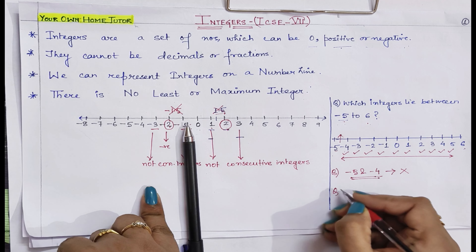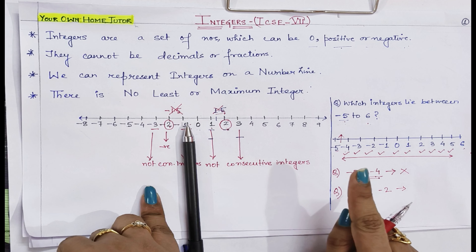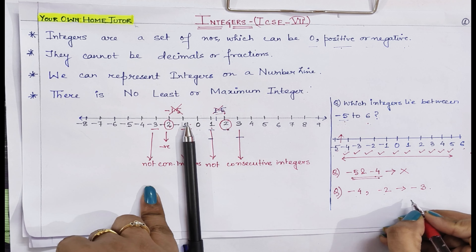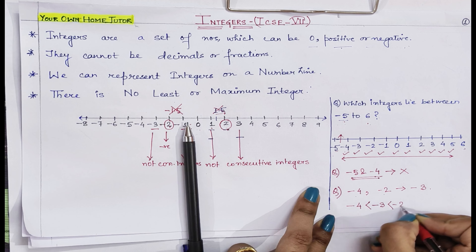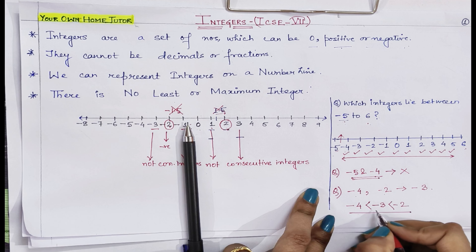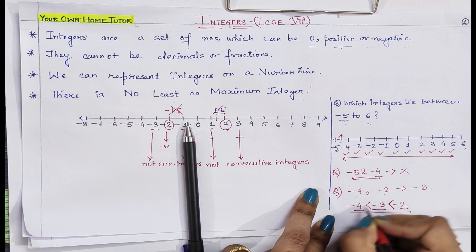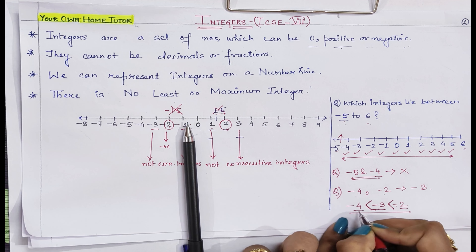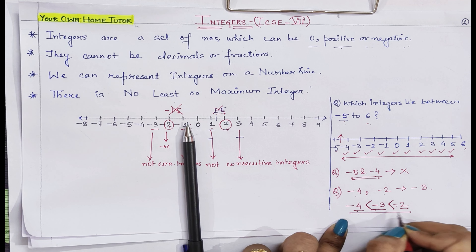Let's take one more example: which integers lie between minus 4 and minus 2? There is only one integer lying between minus 4 and minus 2, which is minus 3 itself. We can write it as: minus 4 < minus 3 < minus 2. This means minus 3 is lying between minus 2 and minus 4. About the comparison sign, minus 2 is greater than minus 3 and minus 3 is greater than minus 4. We will learn more about this in the next topic, which is the absolute value of a number.